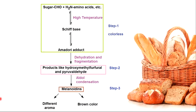The second stage is rearrangement, dehydration, decomposition, and/or reaction of Amadori intermediates to form furfural compounds, reductones, dehydro-reductones, and Strecker degradation products. Then the final stage is the reaction of Maillard intermediate products to form heterocyclic flavor compounds and red or brown to black colored high molecular weight melanoidin pigments.